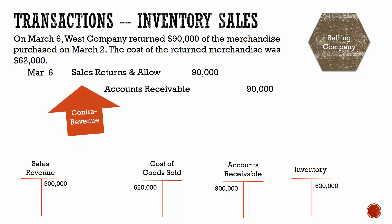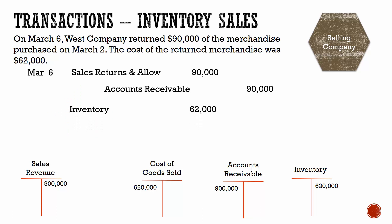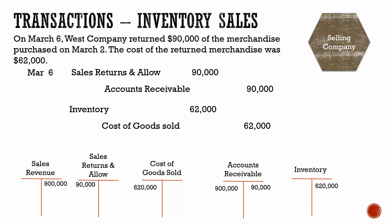Sales returns and allowances is a contra-revenue account — it sits next to our revenues on the income statement but actually decreases our revenues overall. Since the merchandise was returned, we also need to record that in our journals. To record that return, we debit inventory to put it back, and we credit cost of goods sold because we didn't actually sell it. Our accounts receivable balance is going down, and we put the $62,000 back into inventory and reduce cost of goods sold by that amount.